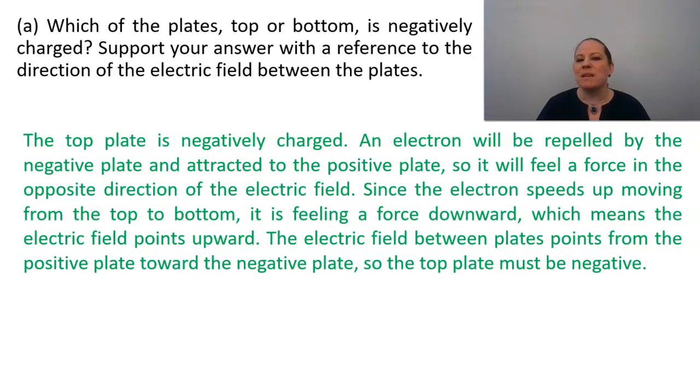Since the electron speeds up, moving from top to bottom, it's feeling a force downward, which means the electric field points upward. And the electric field between plates points from the positive plate toward the negative plate, so the top plate must be negative.